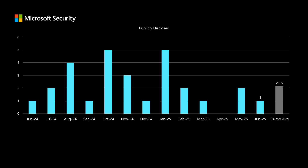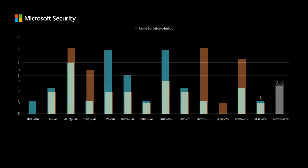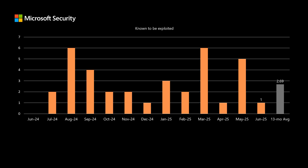Publicly disclosed means that somehow the existence of this vulnerability has been publicly disclosed prior to release. So this is more of a theoretical risk in that we know the existence of this vulnerability is known; however, exploit code hasn't been detected. The number of vulnerabilities known to be exploited at the time of release this month is one — we've been averaging a little over two and a half over the past 13 months. These represent real risk, where either directly through Microsoft or through our partners we have detected some level of exploitation prior to release, meaning that customers are being attacked using these vulnerabilities. We'll talk about that one in just a few minutes.